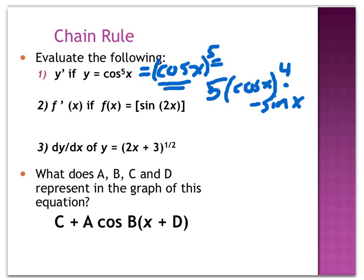Number two is another chain rule problem. Sine is my outside function, 2x is my inside. I say the chain rule every time: derive the outside — the derivative of sine is cosine — leave the inside alone, and multiply by the derivative of the inside. And there's my answer.